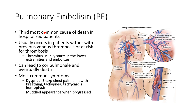In this part of the lecture, we're going to talk about a few other conditions, starting with pulmonary embolisms. Pulmonary embolisms are the third most common cause of death in hospitalized patients. Pulmonary embolisms typically occur in someone who has a venous thrombus, a DVT of some kind, or are at risk for thrombus.